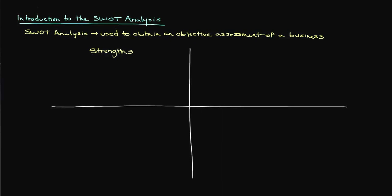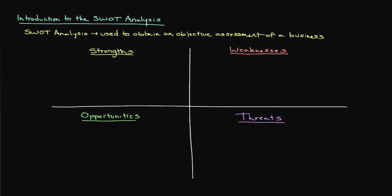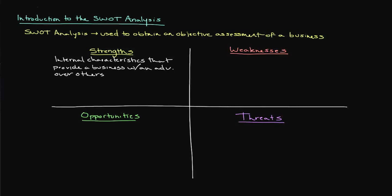Those four areas are strengths, weaknesses, opportunities, and threats. Each area of the SWOT analysis is designed to better familiarize the one conducting it with the internal workings of the business as well as the external forces affecting that business. Strengths represent internal characteristics of the business that provide it with an advantage over others — these are areas in which the business excels and are often a source of competitive advantage.